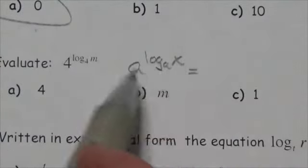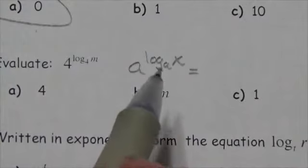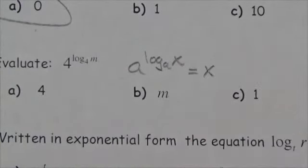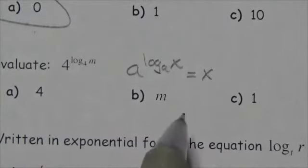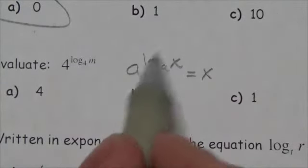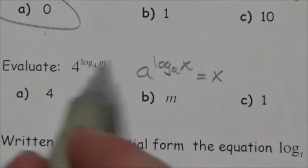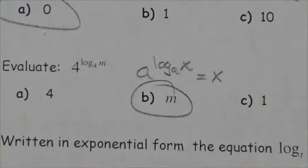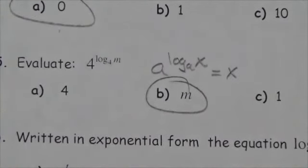So, come over here, and that's consistent because the rule that we looked at earlier in this chapter was a to the log base a of x is x. A power of a and a log base a are inverses of each other, and they cancel each other out. So, right here, 4 to the log base 4 of m is just going to be m. The answer here is b.